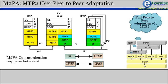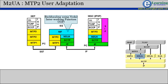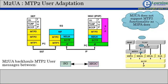M2PA is a full peer-to-peer adaptation of the MTP2 layer functionality. M2UA is used for backhauling of SS7 MTP2 user signaling messages over IP using SCTP. This protocol is used for communication between a signaling gateway and a media gateway controller (MGC). It is assumed that the SG receives SS7 signaling over a standard SS7 interface using MTP2 to provide transport, and the SG acts as a signaling link terminal.